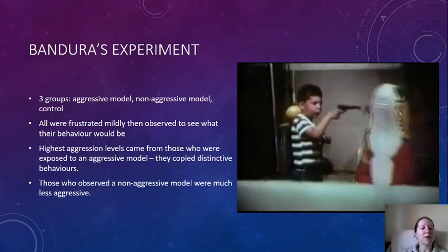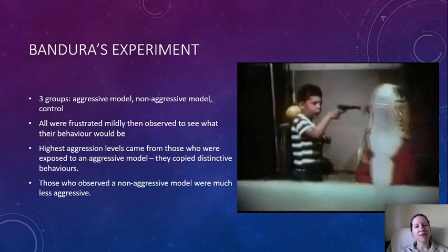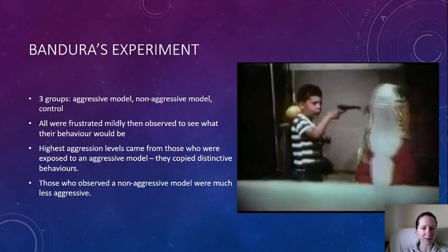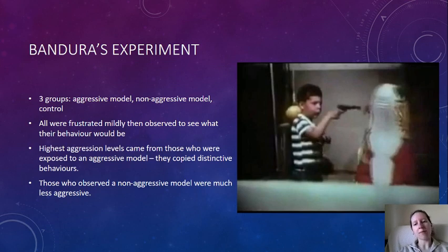Mild frustration was then induced in the children — they started playing with a toy and were told they couldn't continue — and they were observed to see how they would behave with the same toys. The highest aggression levels came from the first group, those who had observed the aggressive model. The model had used particular words like 'pow' and 'boom' and thrown the doll around, and you could see the children copying the exact actions — directly related to which group they'd been in.